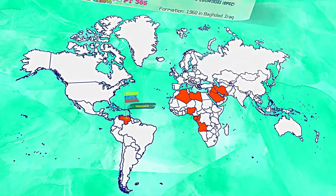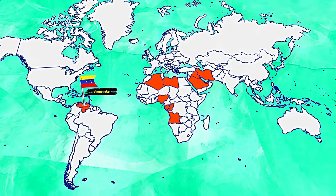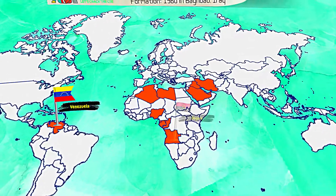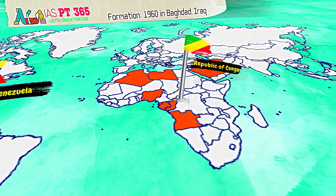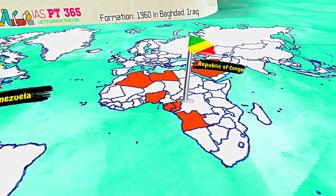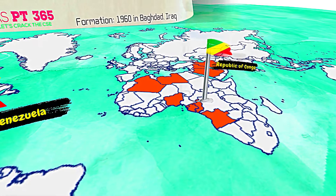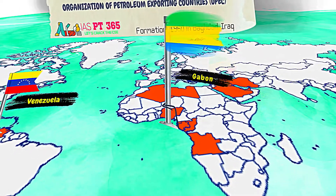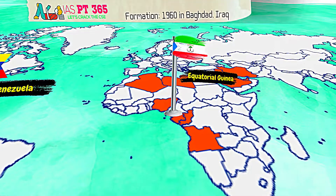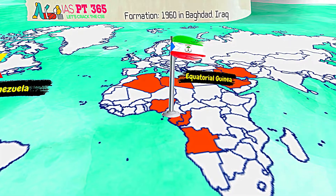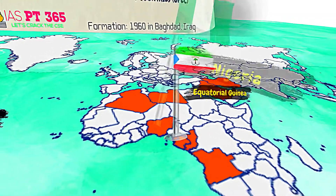Let's have a look at each country and their flag. Venezuela, Angola, Republic of Congo, Gabon, Equatorial Guinea, Nigeria.